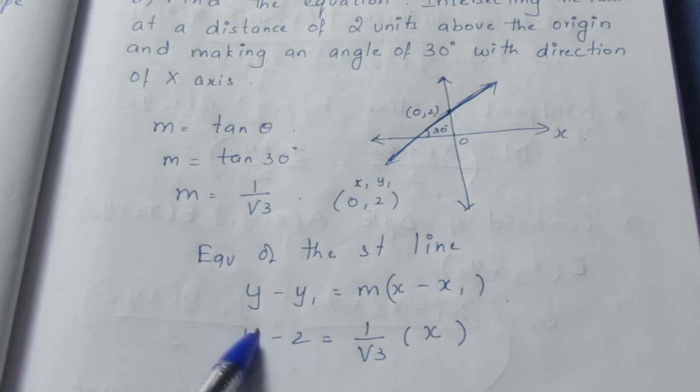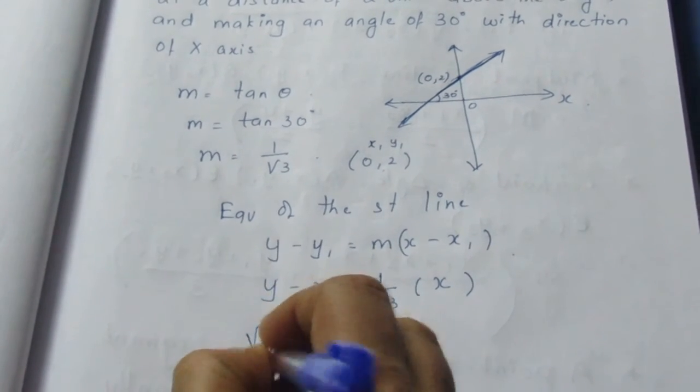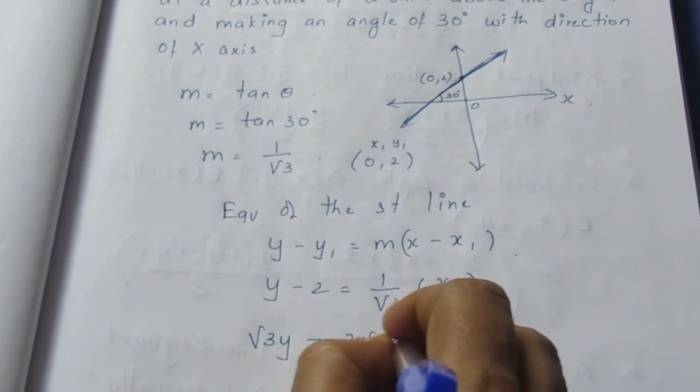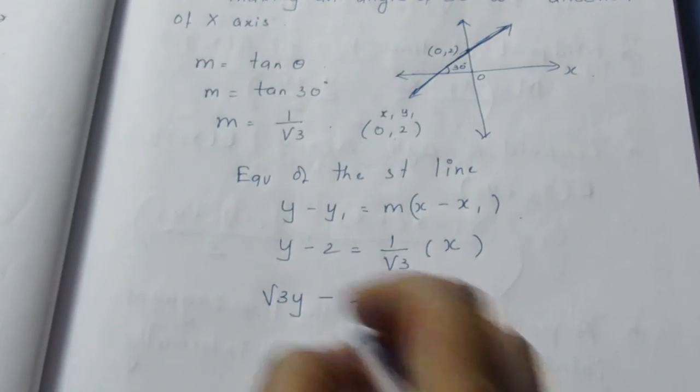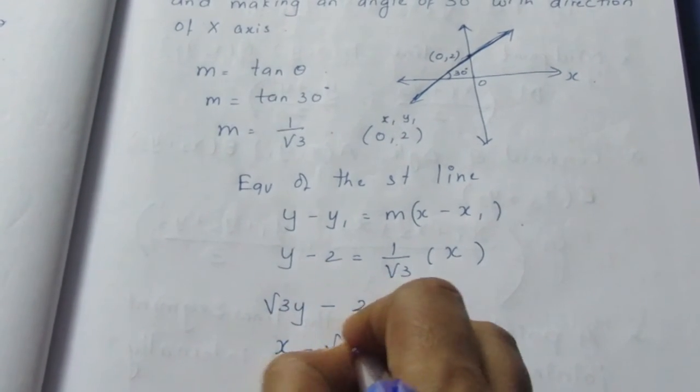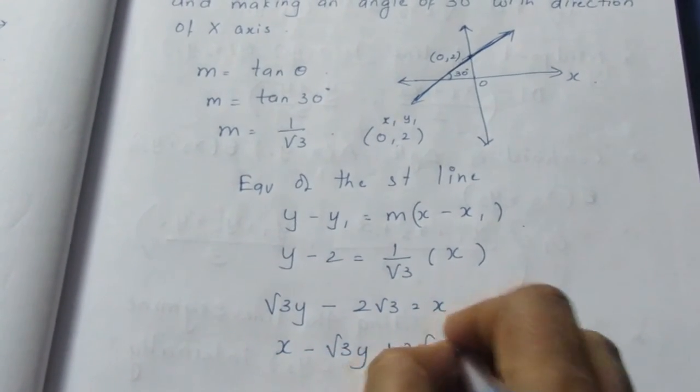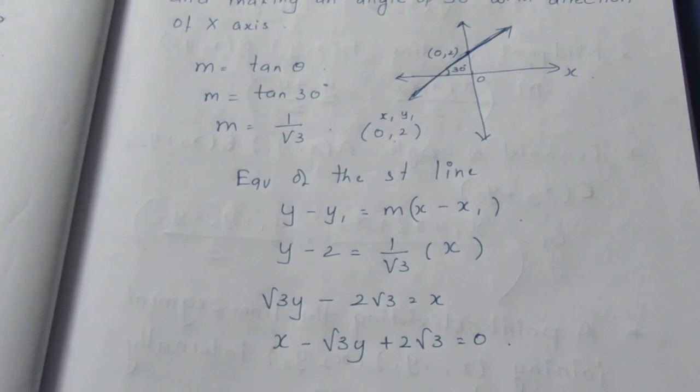Now, bring √3 to the other side. It becomes √3y - 2√3 = x. Bringing everything to one side, it becomes x - √3y + 2√3 = 0. This is the required equation of the given straight line. That's all with the problem. Thank you.